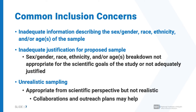You may also have inadequate justification for the proposed sample. The sex or gender, race, ethnicity, or age breakdown may not be appropriate for the scientific goals of the study or not adequately justified. For example, if you're doing a study and the population proposed is quite different from the individuals that have the condition, there should be some explanation for that. If that's not provided, you may receive an unacceptable rating.